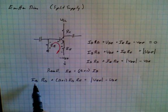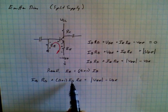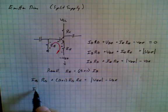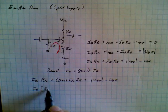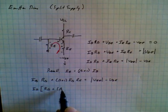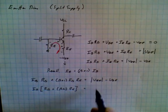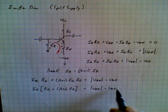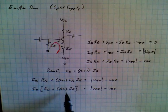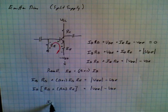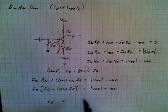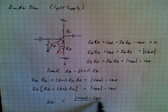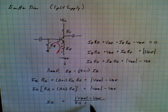We'd like to write this expression in terms of base currents. Recall that IE is equal to beta plus 1 times IB — this makes sense because IC plus IB equals IE, the emitter current being the sum of collector and base currents. Making this substitution gives us IB·RB plus (beta plus 1)·IB·RE equal to the absolute value of VEE minus VBE. We can factor out IB, giving IB times (RB plus beta plus 1 times RE) equal to the absolute value of VEE minus VBE.